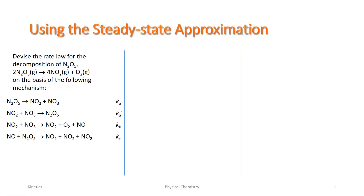In our first example, we're asked to derive the rate law for the decomposition of N2O5. Here's our overall summary reaction, based on the following mechanism. These are the 1, 2, 3, 4 elementary reactions with their associated rate coefficients we are to use in deriving a rate law, and we'll need to apply the steady-state approximation in order to do so.